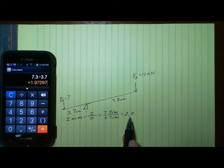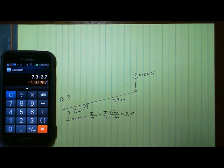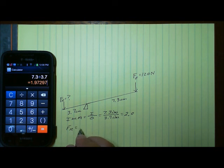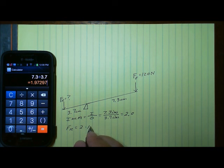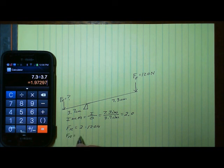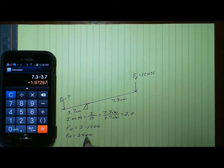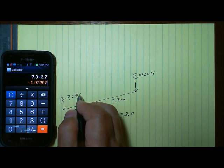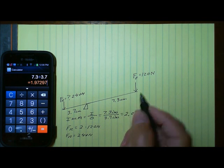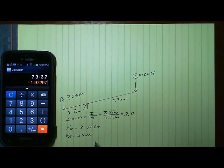An ideal mechanical advantage of 2.0 means any effort force applied to the input side is multiplied by a factor of two, so we should be able to lift twice as much resistance force. The force of resistance equals 2 times the force of effort: 2 times 120 newtons gives us 240 newtons of resistance. So we can lift a resistance force of 240 newtons with a 120 newton effort force using this first class lever.